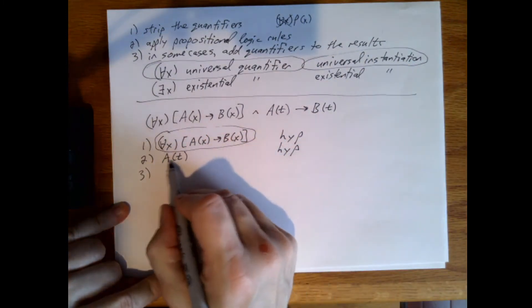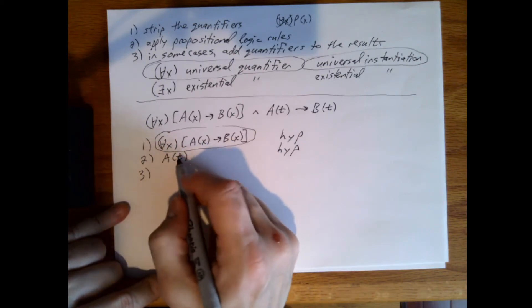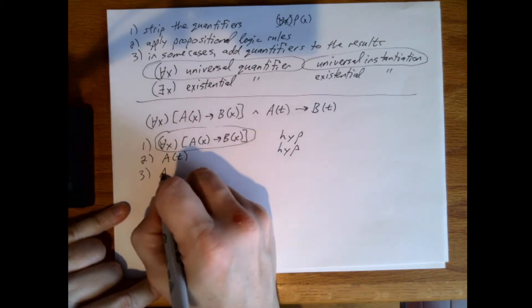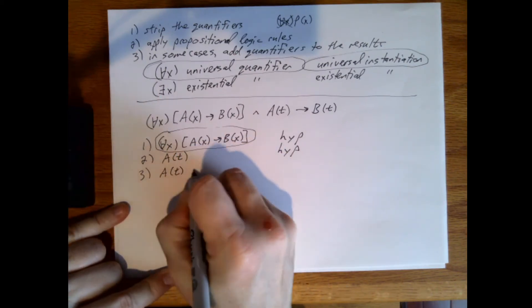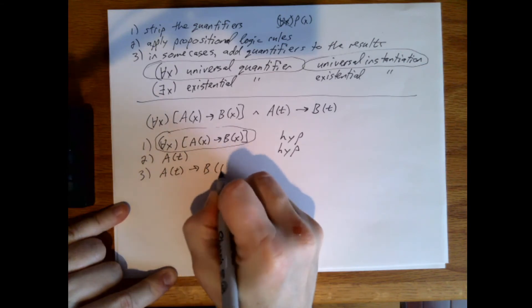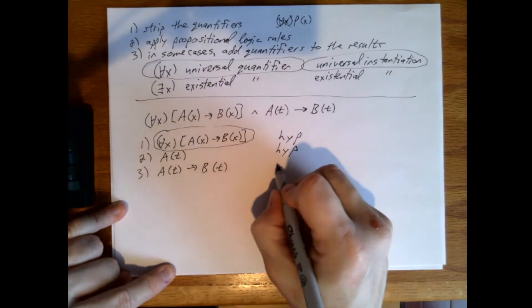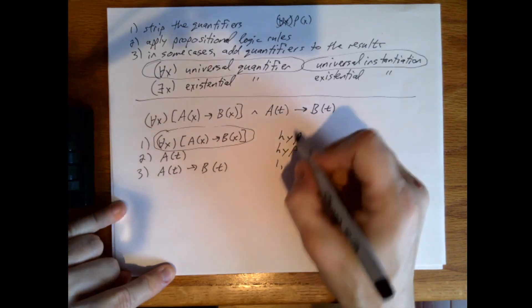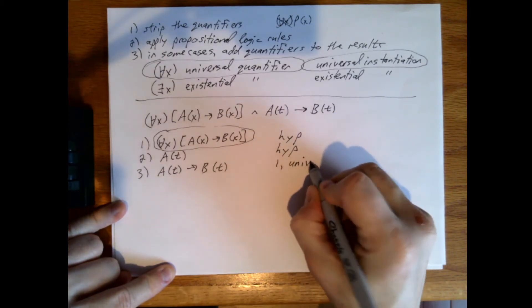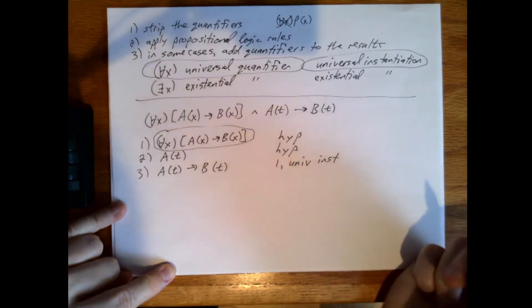That is, represent it by talking about a particular value within the domain, which happens to be t here. So this will just be a of t implies b of t. And so this would be, from step one, universal instantiation.